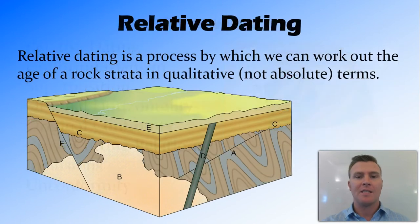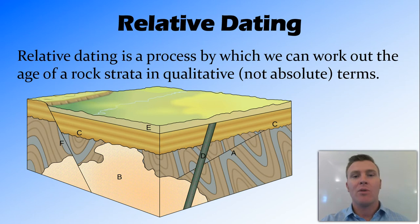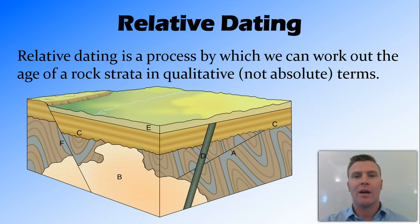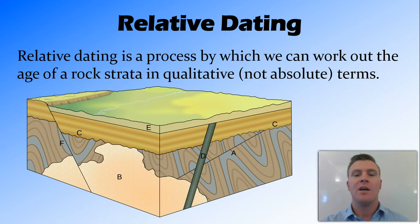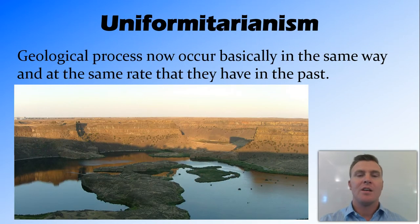Relative dating is not when you marry a cousin, but rather a process by which we can work out the age of rock strata — layers of rock — qualitatively. This doesn't give us absolute terms; we can't apply numbers and say that one's a hundred thousand years old or a hundred million years old. Rather, we can look at different strata and say that one's older than this one, and this one's older than that one — that's the oldest and that's the youngest.